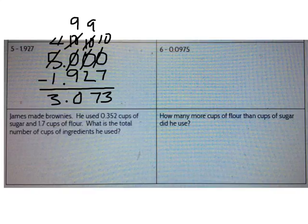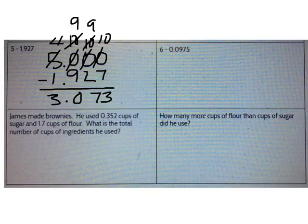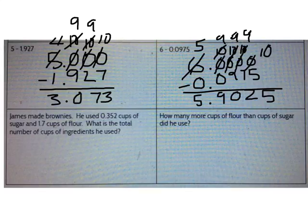Now you try one on your own. What's 6 minus 975 ten-thousandths? Go ahead and solve that problem now. The correct answer is 5 and 9025 ten-thousandths.